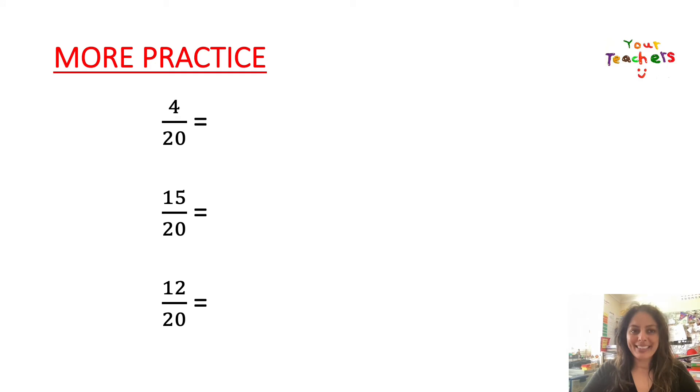And some more practice. We have now got 4 over 20, 15 over 20 and 12 over 20. What can you do to the denominator to convert them to fractions of a baseline of 10? So if you think you know what to multiply the denominator by, then go ahead and do it now. Press pause and have a little think.